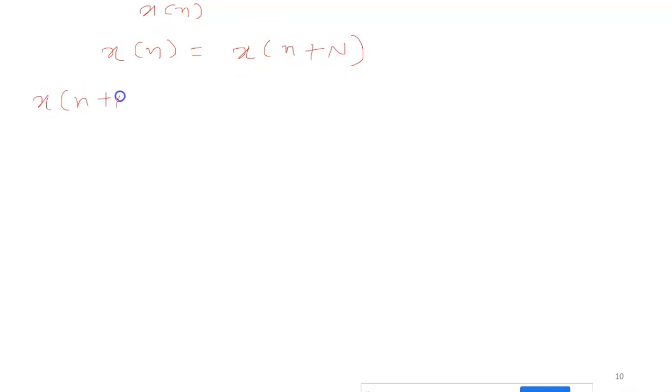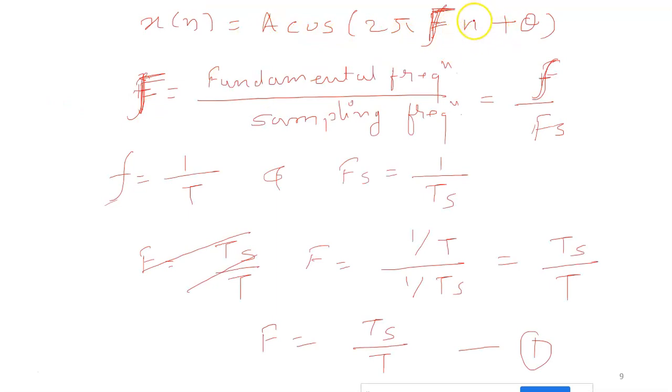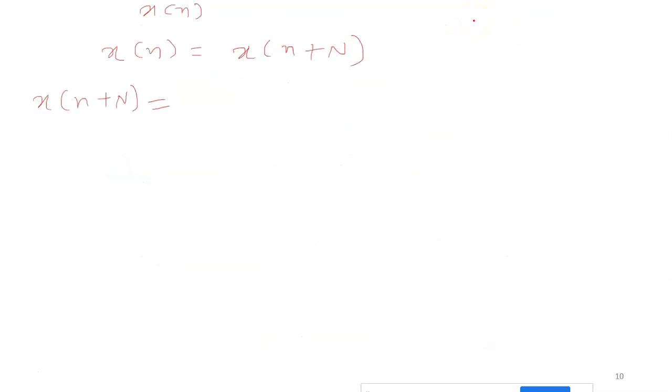xN plus capital N, how can I write this? In this equation I will put n equal to n plus capital N. Therefore it becomes A cos 2 pi f times n plus capital N plus theta. This equals A cos 2 pi fn plus 2 pi f capital N plus theta.